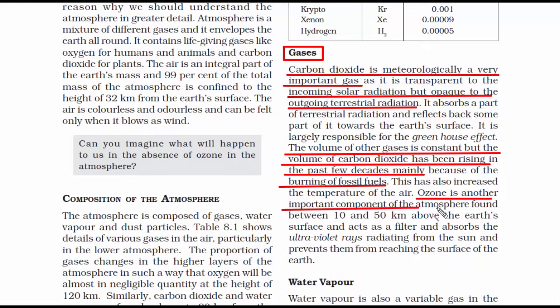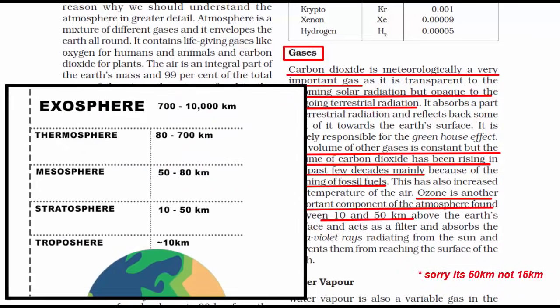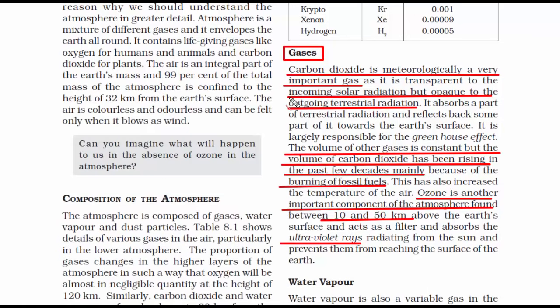Now ozone is another important component of the atmosphere that is found between 10 and 15 km above the earth's surface. Basically it's located in the stratosphere. What ozone layer does is it acts as a filter and absorbs the ultraviolet rays that come from the sun. So UV rays are very harmful. If taken in excess, it can cause sunburn, skin cancer etc.